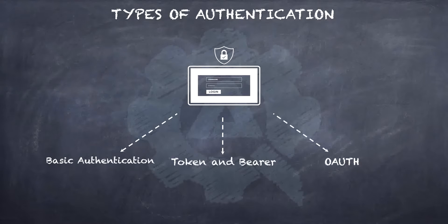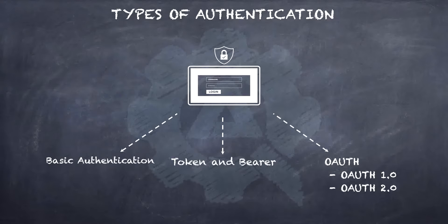To begin at a high level, OAuth is neither an API nor a service. It is basically an open standard for authorization and anyone can implement it. OAuth is a standard that apps can use to provide client applications with secure delegated access. OAuth works over HTTPS and authorizes devices, APIs, servers, and applications with access tokens rather than credentials. There are two versions of OAuth: OAuth 1.0 and OAuth 2.0. These specifications are completely different from one another and cannot be used together — there is no backwards compatibility between them. OAuth 2.0 is the most widely used form of OAuth.